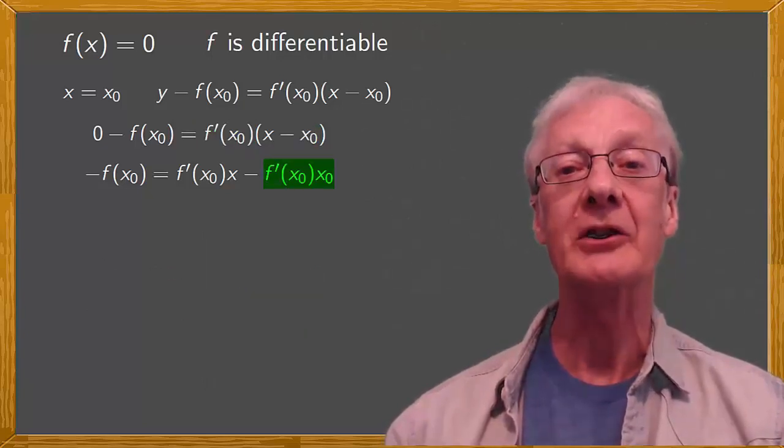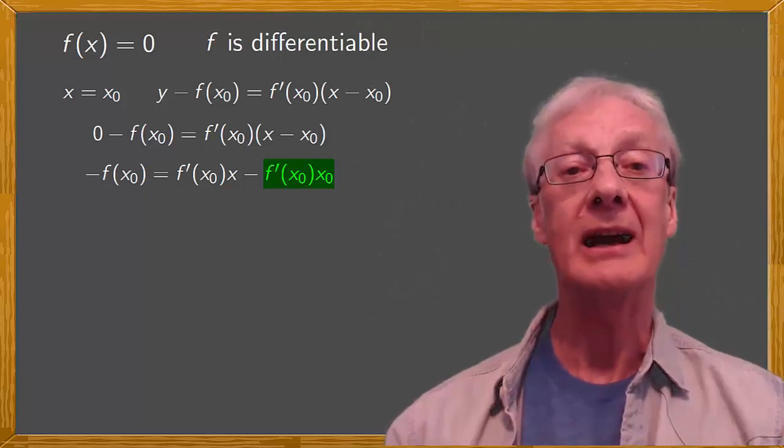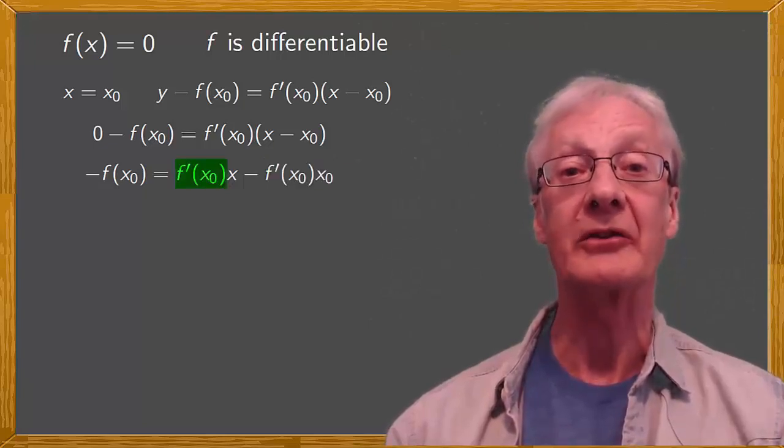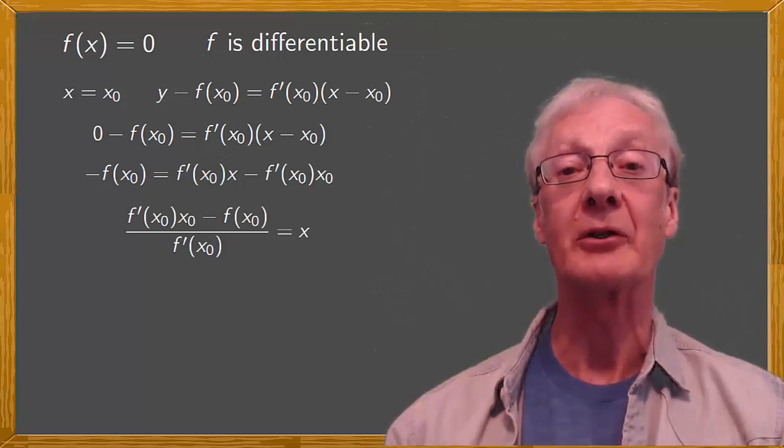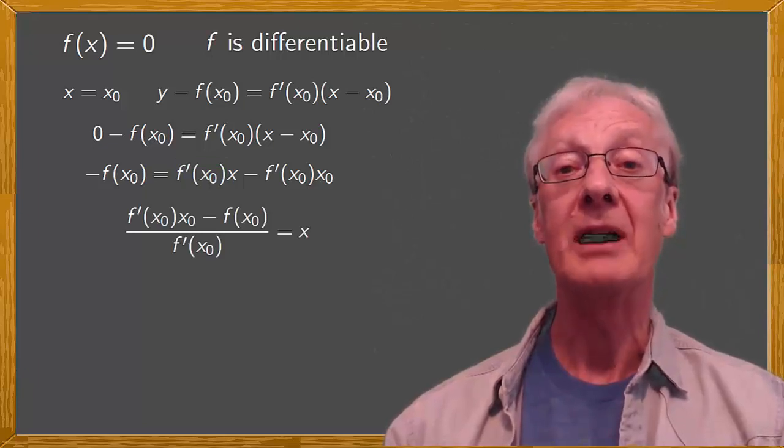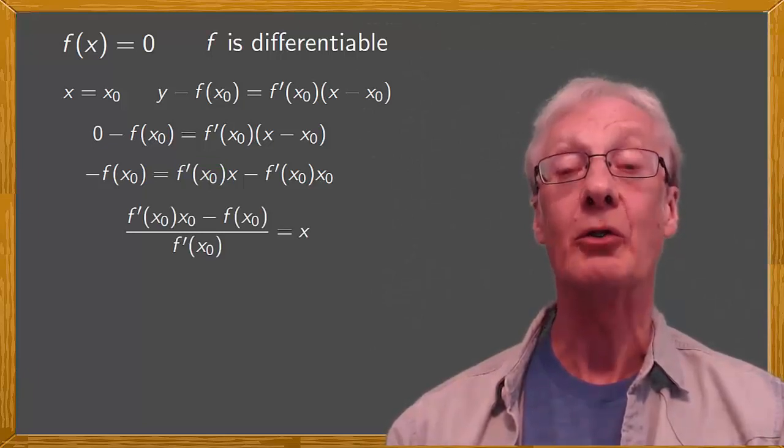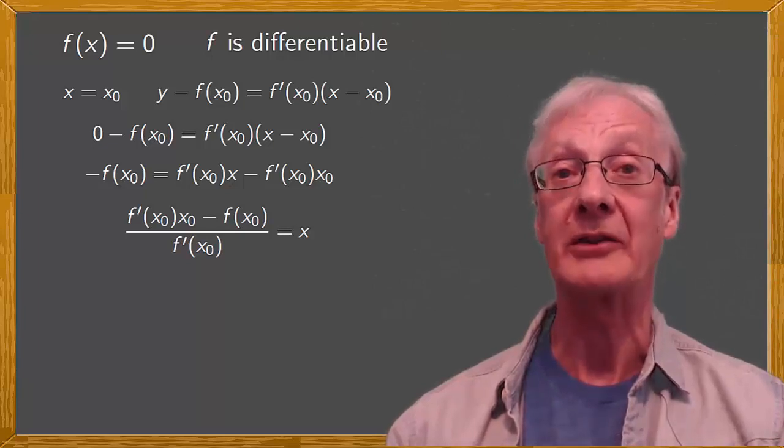Moving the second term onto the left-hand side, and dividing by f prime of x0, we get that f prime of x0 times x0 minus f of x0, all divided by f prime of x0, is equal to x.